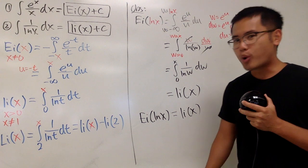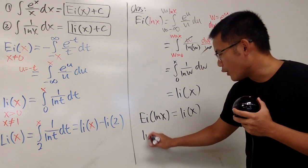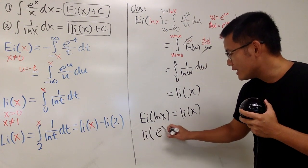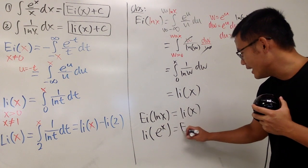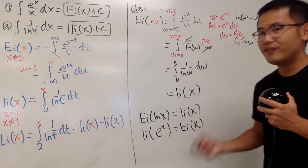And then, you can probably guess it, if we have li(e^x), what do we get? Yes, this right here will get you Ei(x). Very, very cool.